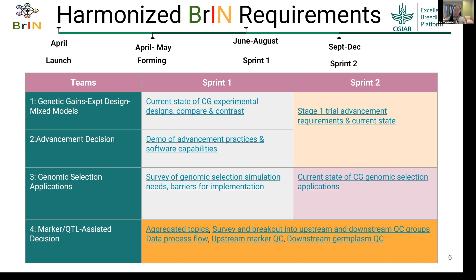For genomic selection, through working with many genomic selection experts, we aggregated the current state of all centers in their genomic application status, and compared and contrasted the capabilities in standalone tools, EBS, BMS, or R-based approaches, as well as the aggregated recommendations from EIB Module 5 in simulation recommendations.